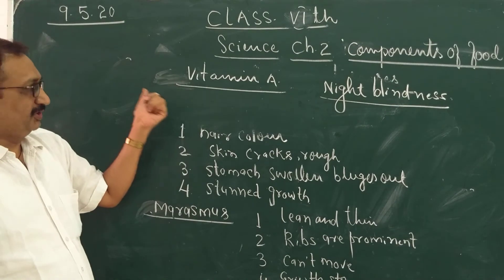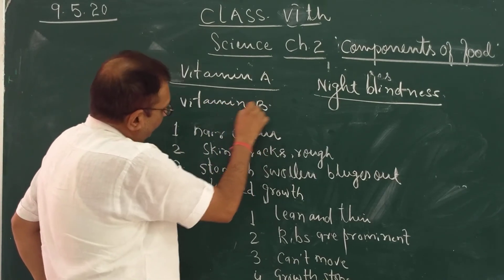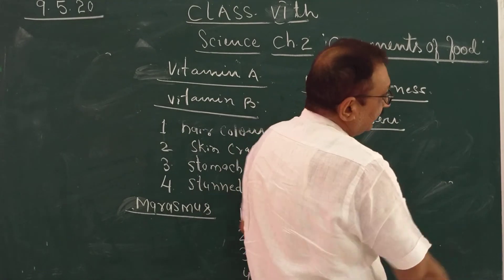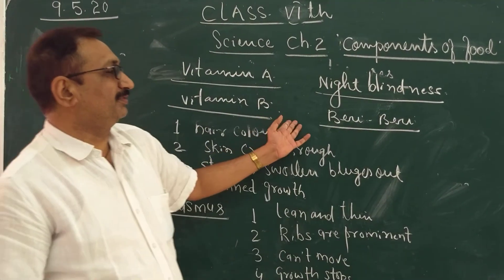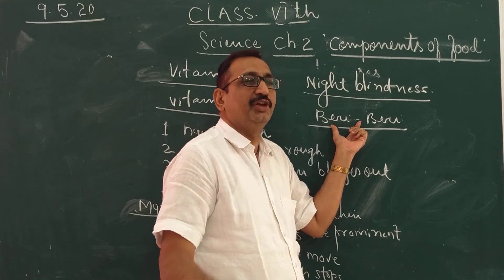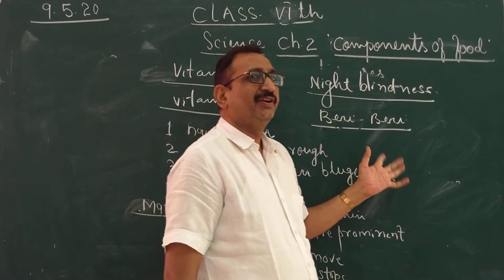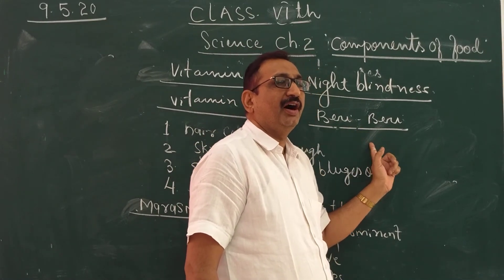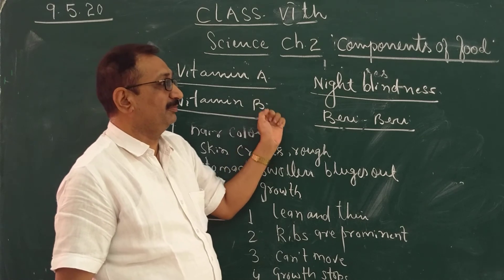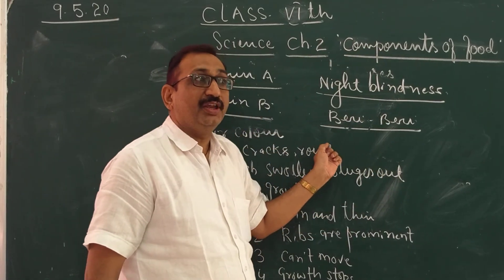And now the disease due to the deficiency of vitamin B. Students, do you know about this disease? The main thing is the energy level becomes very low — people become lethargic and don't want to do anything. Sometimes heart failure may also occur. And if there is acute deficiency of vitamin B, the person may become paralyzed, and even death can also occur.